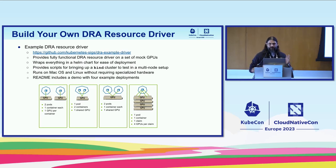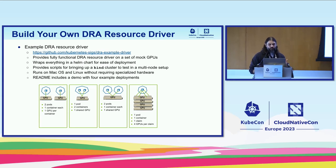If you take nothing else away from this talk and want to build a resource driver, we've created an example resource driver as a repo under the Kubernetes SIG organization on GitHub. It provides a fully functional DRA resource driver on a set of mock GPUs, wrapped in a Helm chart for easy deployment, with scripts for bringing up a kind cluster in a multi-node setup. It runs on Mac and Linux without requiring specialized hardware — you can clone the repo, run a couple of scripts, see the demo, and dig into the details yourself.